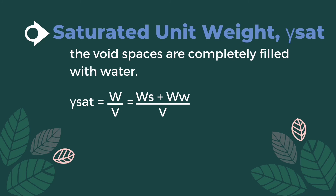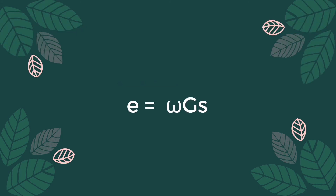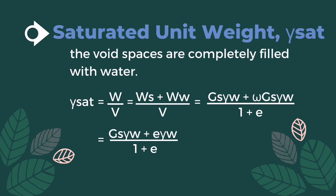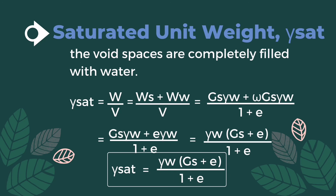Total weight equals weight of soil plus weight of water. Substituting the values into simplified form: since void ratio equals moisture content times specific gravity, we get specific gravity times unit weight of water plus void ratio times unit weight of water, divided by one plus void ratio. Factoring out unit weight of water, the final formula for saturated unit weight equals unit weight of water times (specific gravity plus void ratio) divided by one plus void ratio.